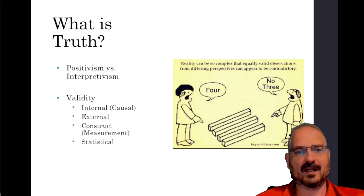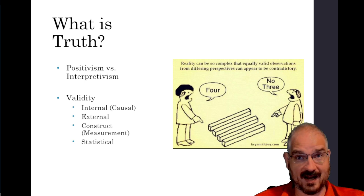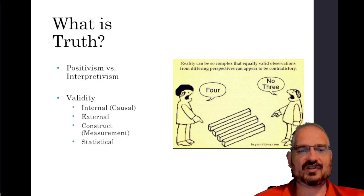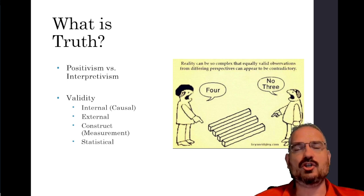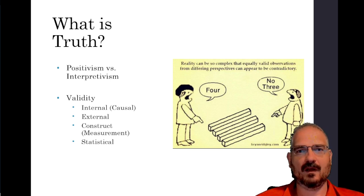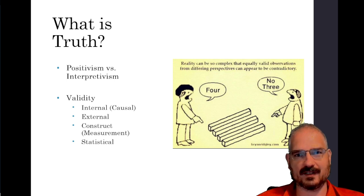We're looking at whether we're doing our research in a way that minimizes biases, error, and problems that prevent us from getting as close to truth as we can. There are four large categories of validity that research methods has to be focused on: internal, external, construct, and statistical.